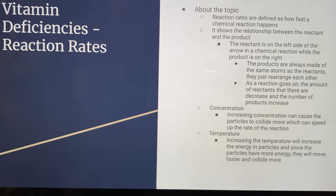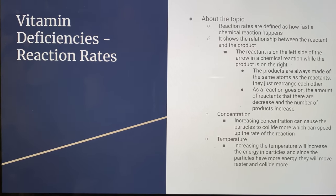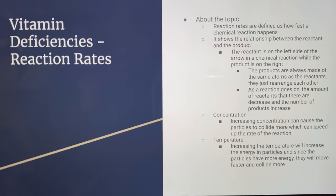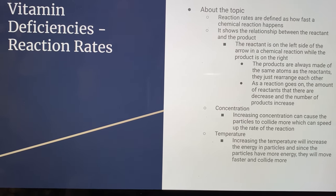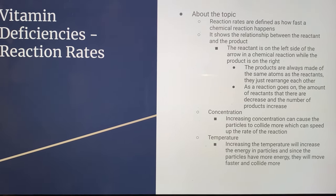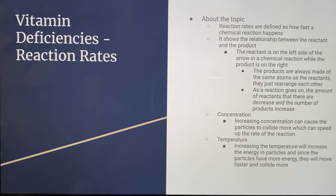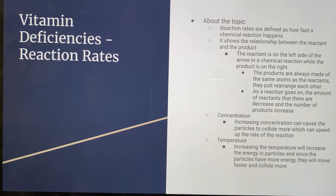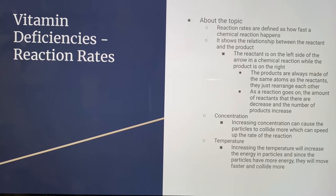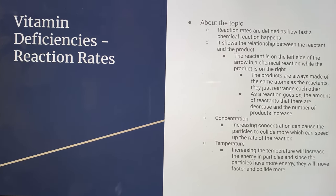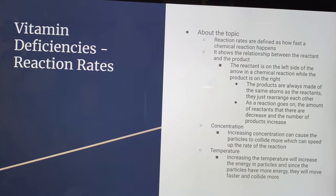The next topic is vitamin deficiencies and reaction rates. Reaction rates are defined as how fast a chemical reaction will happen and show the relationship between the reactant and the product. In a chemical formula, the reactant is always on the left side of the arrow and the product is always on the right side. The products are always made of the same atoms as the reactants — they are just rearranged.